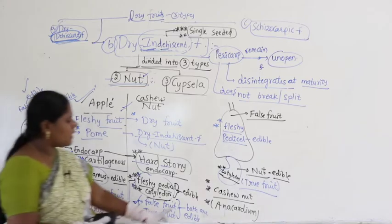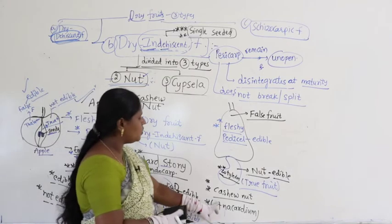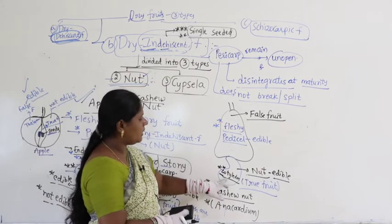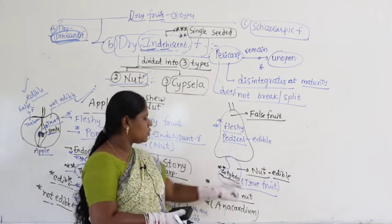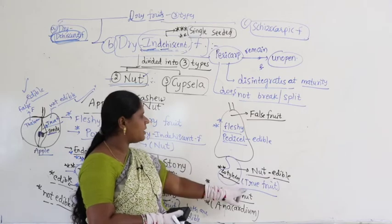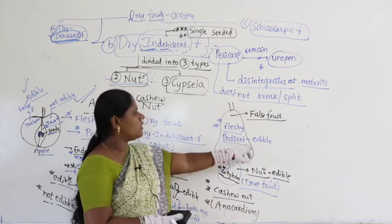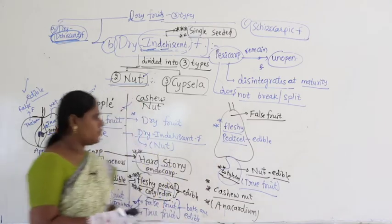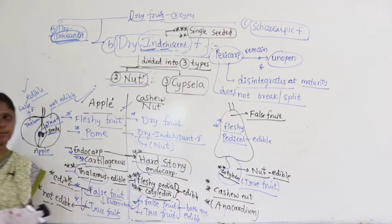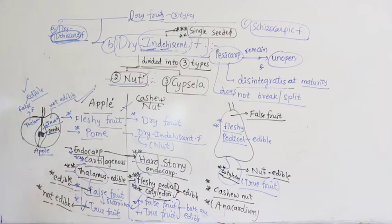So, Anacardium — cashew — the cotyledon (true nut) is edible; the true fruit is also edible; fleshy pedicle is also edible, that comes under false fruit. Very, very important — we have to remember this.